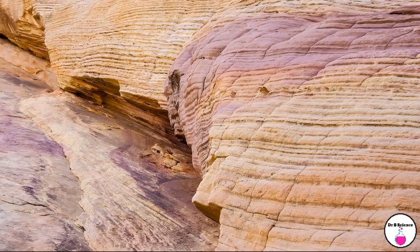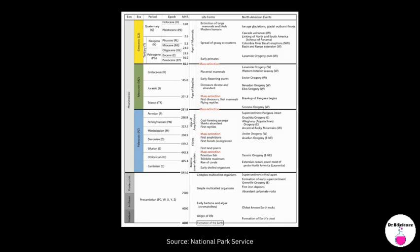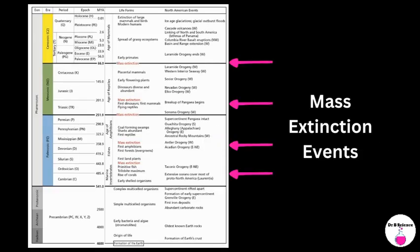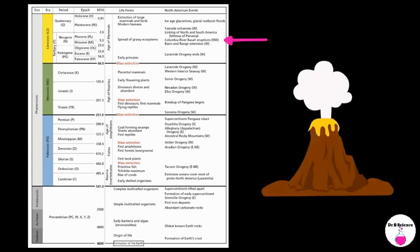Different layers and the fossils they contain also provide evidence for major events in Earth's history. These events can range from the formation of mountain chains and ocean basins, the evolution or extinction of particular species, to significant volcanic eruptions.